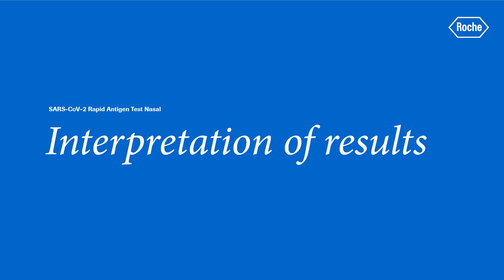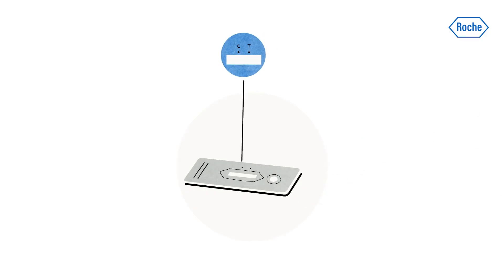Interpreting the results. A colored line appears in the top section of the result window to show that the test is working properly. This is the control line C. Even if the control line is faint or not uniform, the test should be considered valid.